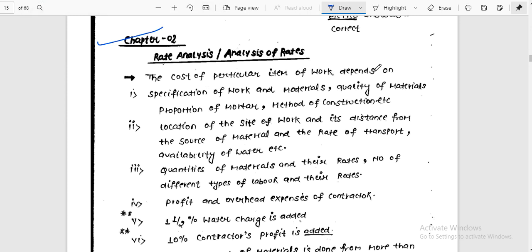The cost of particular item of work depends on specifications of the work and materials, quantity of the materials, proportions of mortars, and method of construction. The cost depends on the specification of the work, what materials you use, what are the qualities of the materials, the mortar proportions, and the methods of construction.